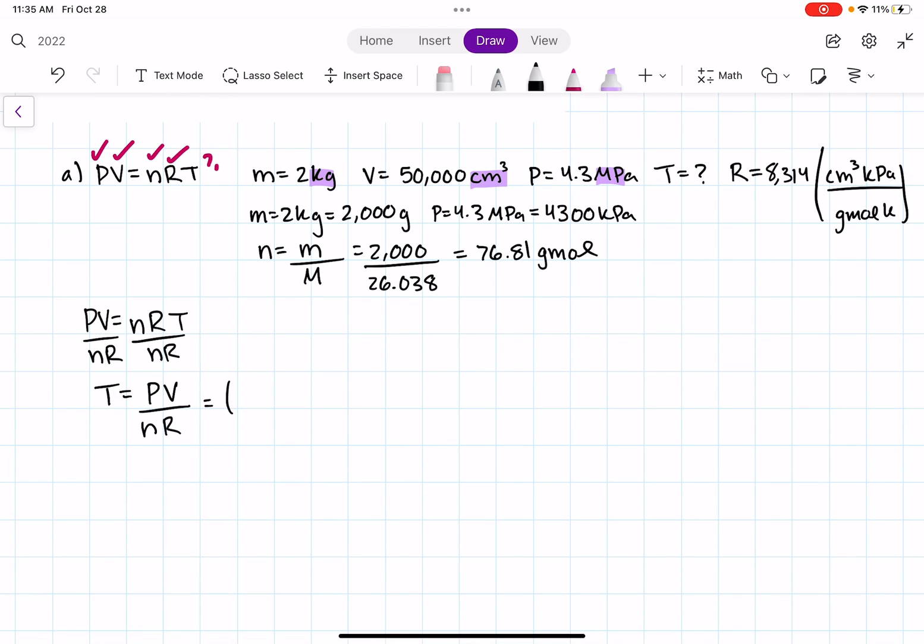So pressure is 4,300. Remember we're going to use the values that we converted for. So that matches our gas constant. Volume is 50,000. Our moles are 76.81. And our value is 8,304. After we plug that into our calculator,